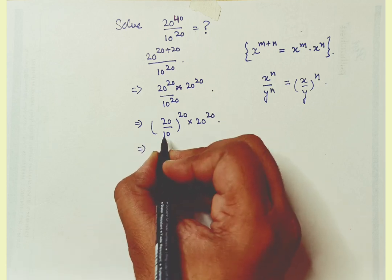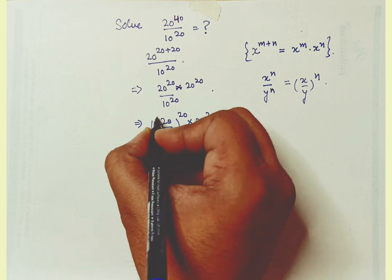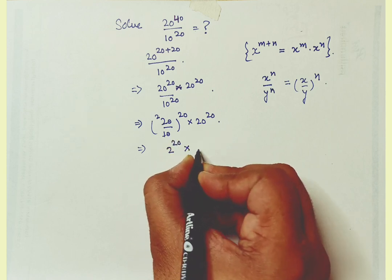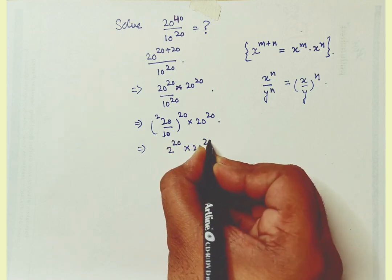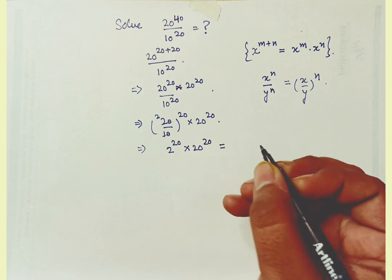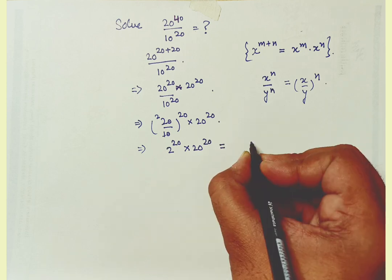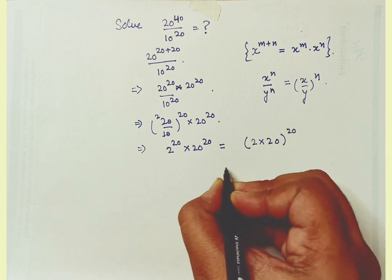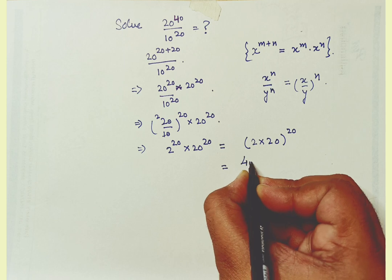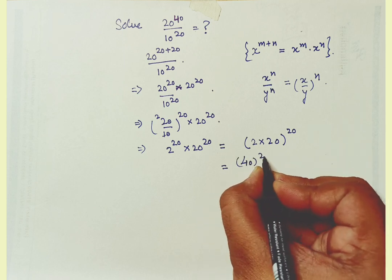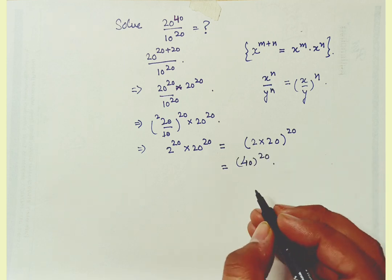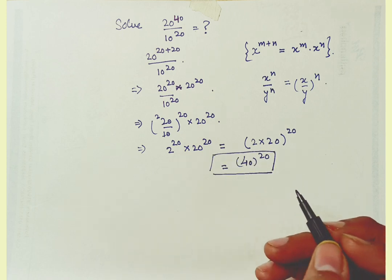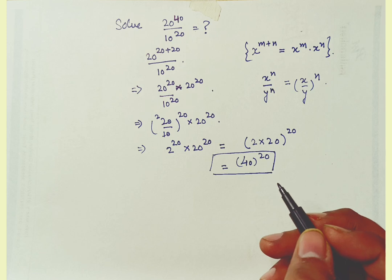The 10 cancels out, giving us 2 raised to power 20 into 20 raised to power 20, which can be written as 2 into 20 whole raised to power 20, or 40 raised to power 20. So we have found the value: 40 raised to power 20 is our answer.